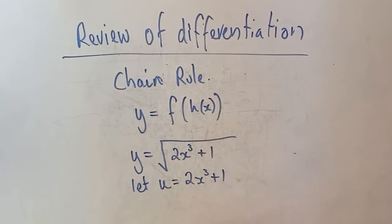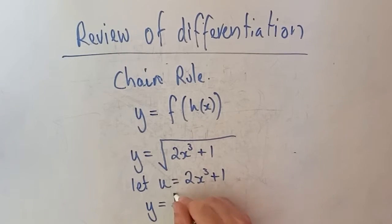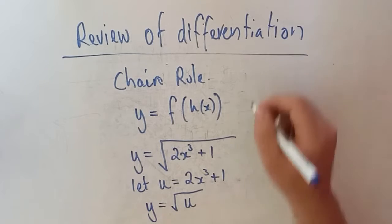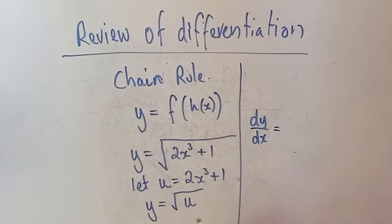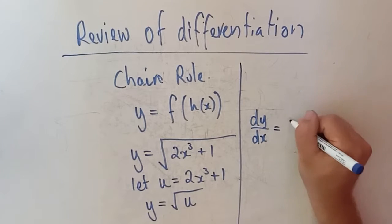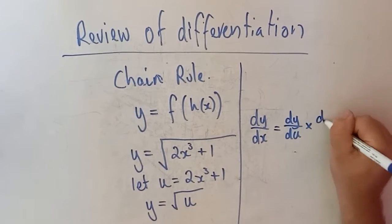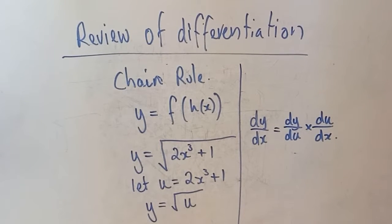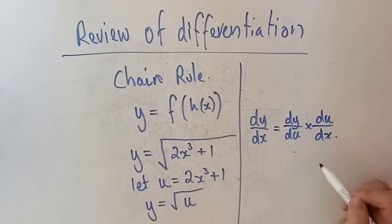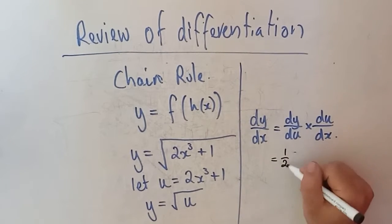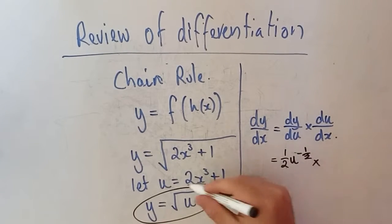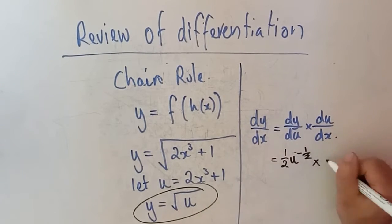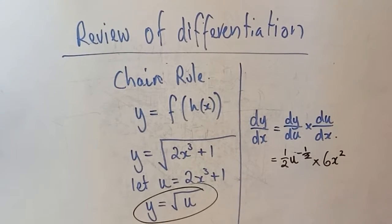So that gives me y as a function of u: y(u) equals the square root of u. To find dy/dx, I use dy/du multiplied by du/dx — the du's cancel out and I end up with dy/dx. For dy/du of the square root function, I get one-half times u to the negative half. Then du/dx: the 3 comes out the front, giving me 6x squared.